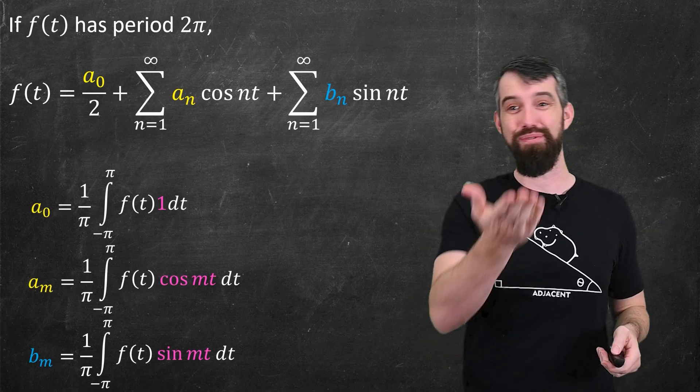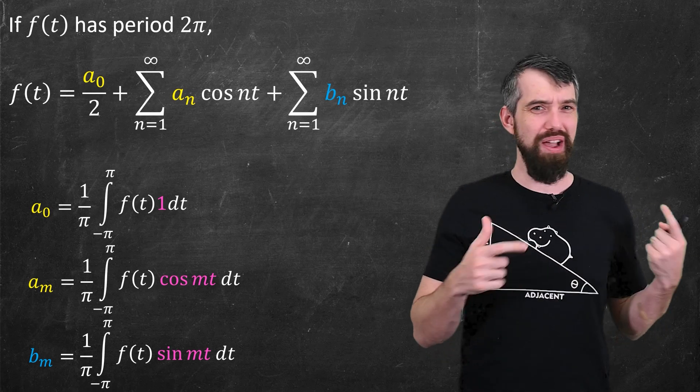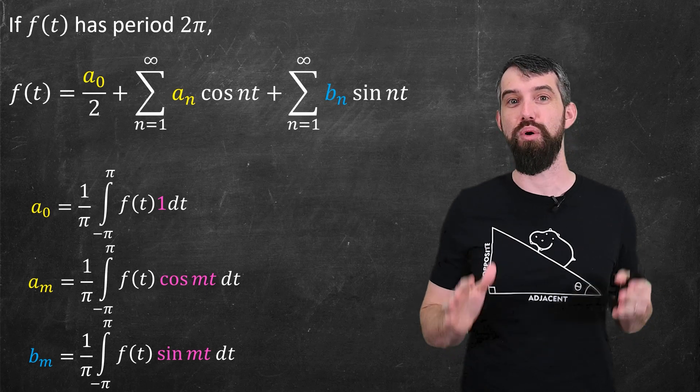And under some reasonable conditions for f, this can occur. The Fourier series also comes with some formulas for what the a₀, the aₙ, and the bₙ are going to be. We've covered this in previous videos in my Fourier series playlist, but we're not going to use them more in this video.